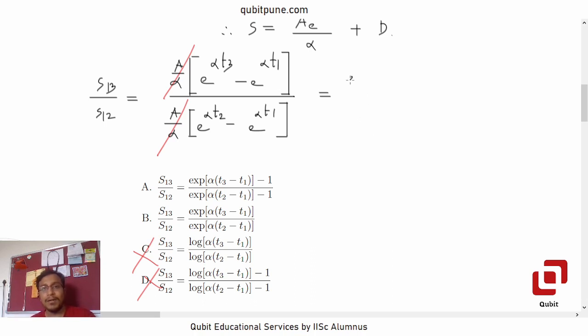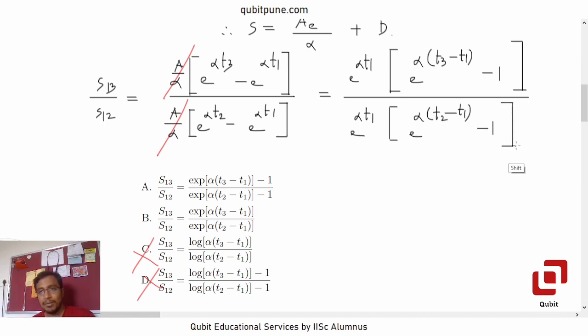If we take e to the power alpha t1 common from the numerator, then what will we get? e to the power alpha t3 minus t1 minus 1 upon e to the power alpha t1 into bracket e to the power alpha t2 minus t1 minus 1.